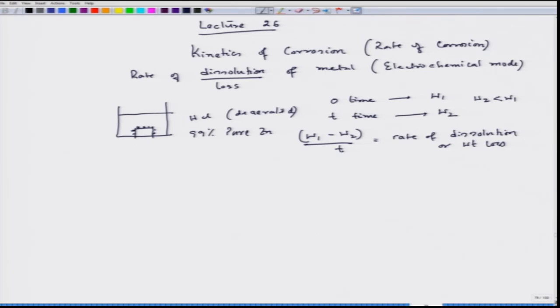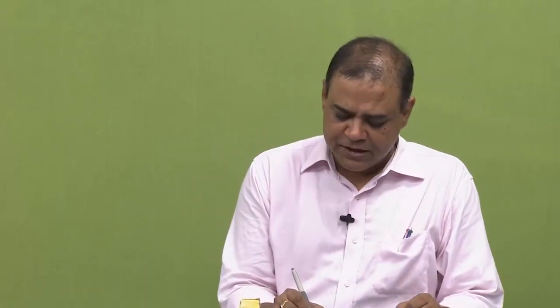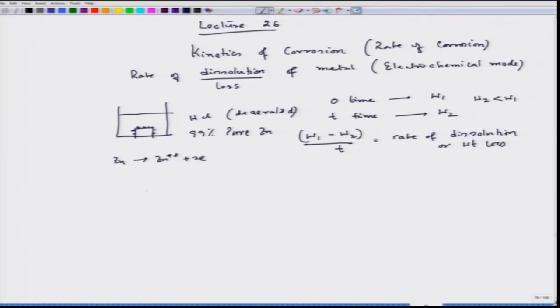This rate has a per-unit-time component. Now we have to see where the reactions are taking place. The reactions are always taking place on the surface of the metal — not the entire bulk. Hydrogen evolution takes place at the surface: zinc goes to Zn²⁺ + 2e⁻, and hydrogen takes care of those 2 electrons to form H₂. This gas is generated, and Zn²⁺ reacts with Cl⁻ to form ZnCl₂. All these reactions are taking place on the surface of the metal.